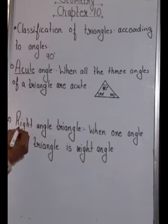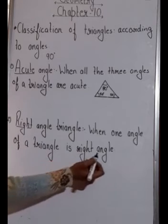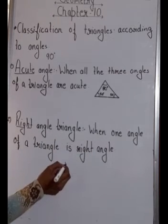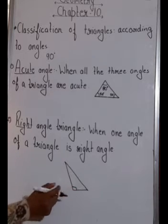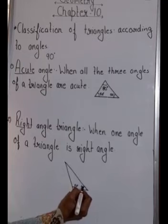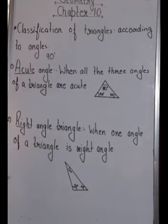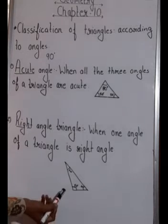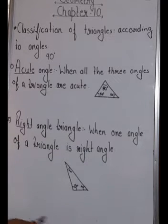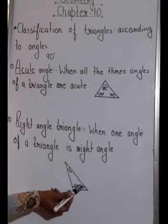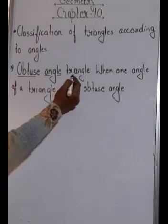Next is the right angle triangle. A right angle is exactly 90 degrees. When one angle of a triangle is 90 degrees — for example, angles of 90°, 60°, and 30° — the triangle is a right angle triangle. Keep in mind there should be only one angle of 90 degrees, because the sum of all three angles of a triangle must equal 180 degrees.